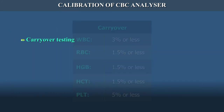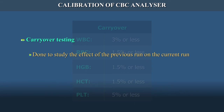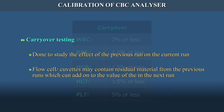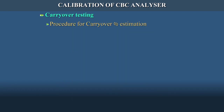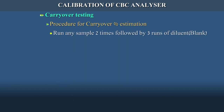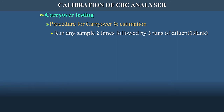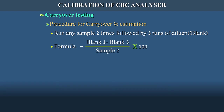Carryover testing: this is done to study the effect of the previous run on the current run. Flow cells or cuvettes may contain residual material from previous runs which can add to the value in the next run. Procedure for carryover percentage estimation: run any sample 2 times followed by 3 runs of diluent and apply the following formula — Blank 1 minus Blank 3 divided by Sample 2 multiplied by 100.